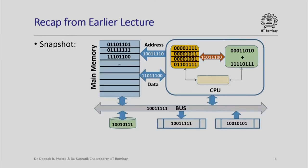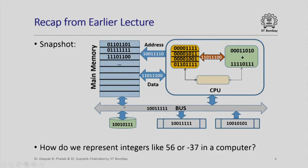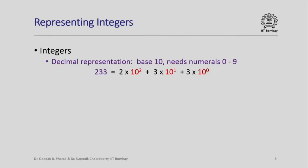From the earlier lecture you would recall that a snapshot of our simple computer looks like this, where we have different parts of the computer and in each part we basically have sequences of 0s and 1s. So the question is: in such a setting, how do we represent integers like 56 or -37 in terms of 0s and 1s inside a computer? Now when we talk of representing integers the most natural thing that comes to mind is a decimal representation, with which all of us are aware.